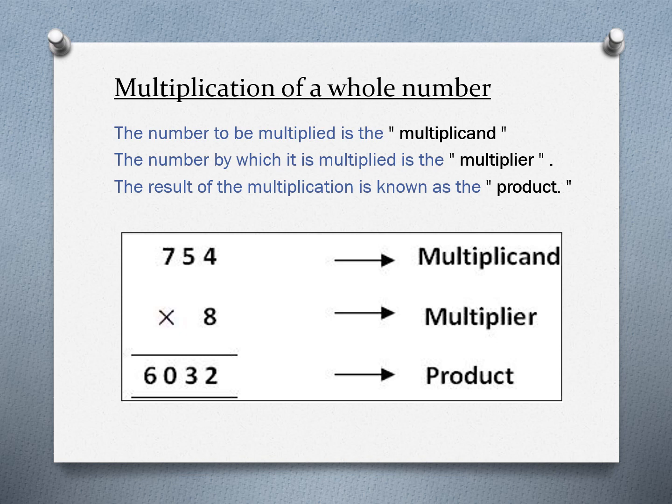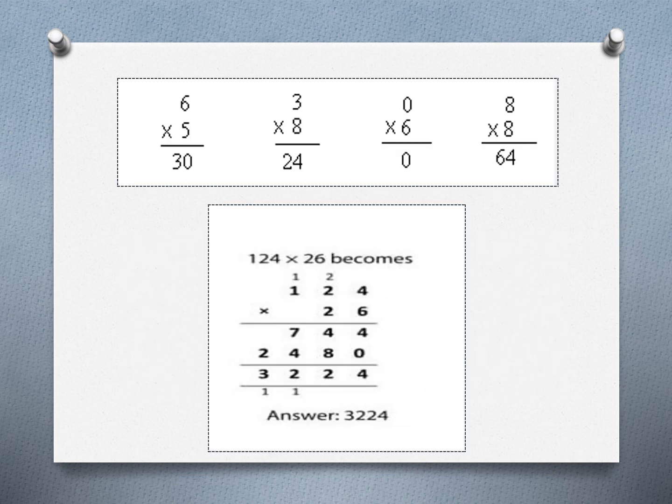Multiplication of whole numbers — each part of a multiplication equation has a name. The number to be multiplied is the multiplicand. The number by which it is multiplied is the multiplier. The result of the multiplication is known as the product. In this example, 754 is the multiplicand and 8 is the multiplier; when we multiply 754 by 8 we get the product 6032.